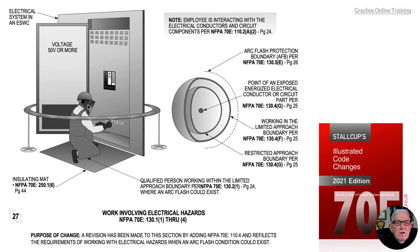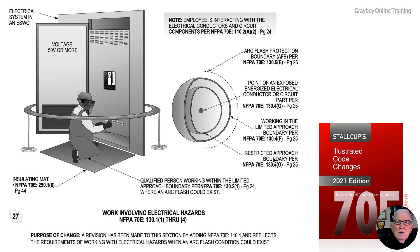Standing in the limited approach boundary — with the back of your head — you need your shock hood, your shield, your glasses, and so forth. The point of exposed energized electrical conductor circuit parts is when you're actually working on that part, either with an insulated tool or insulated gloves rated equal to or greater than the voltage. The restricted approach boundary is usually extending the protective arm with a protective tool, insulated glove, and so forth, to make contact with that component.